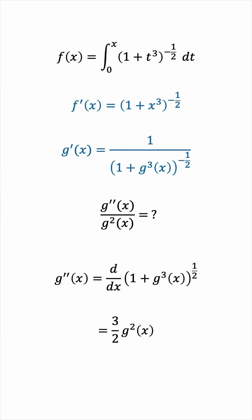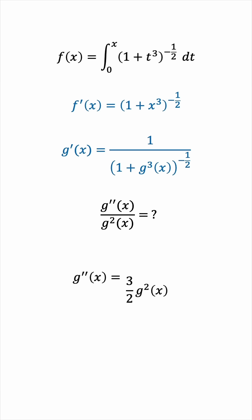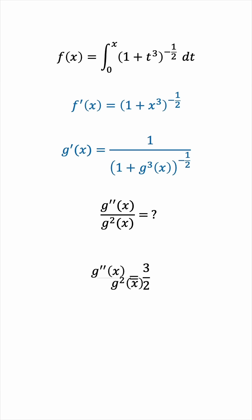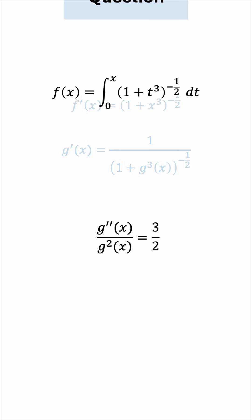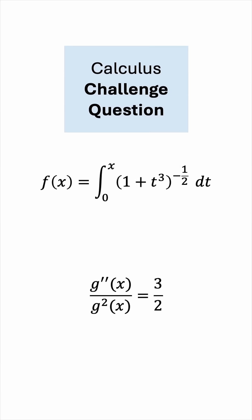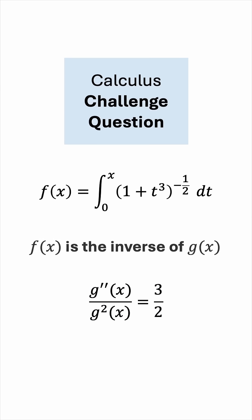So, we can find the ratio of the second derivative of g to the square of g, and this works out to be 3 halves. So, there you have it.